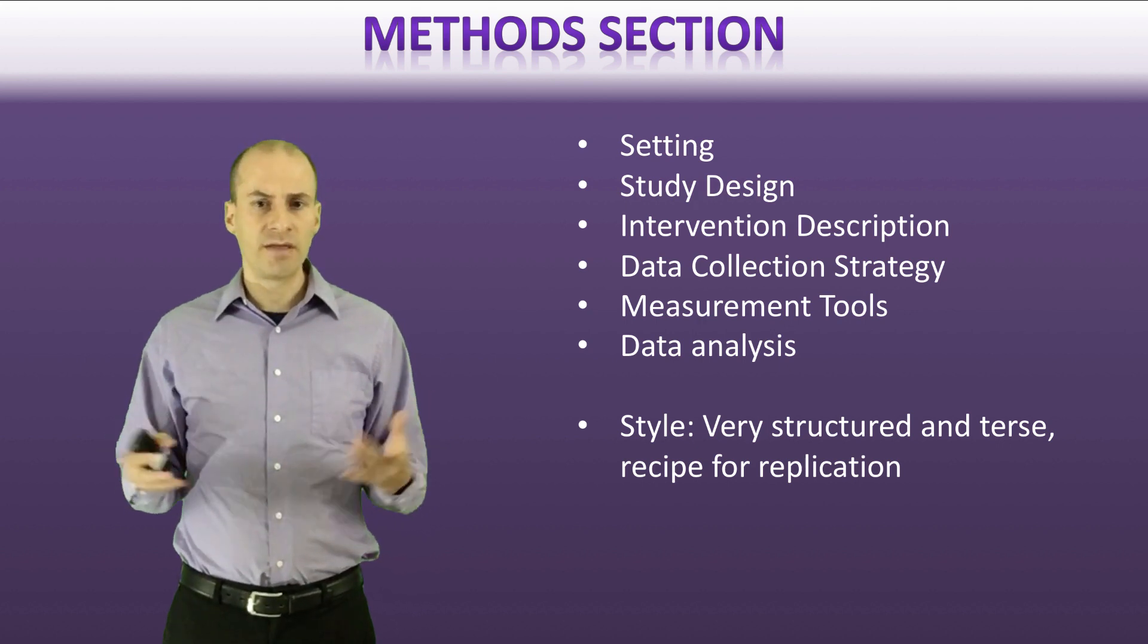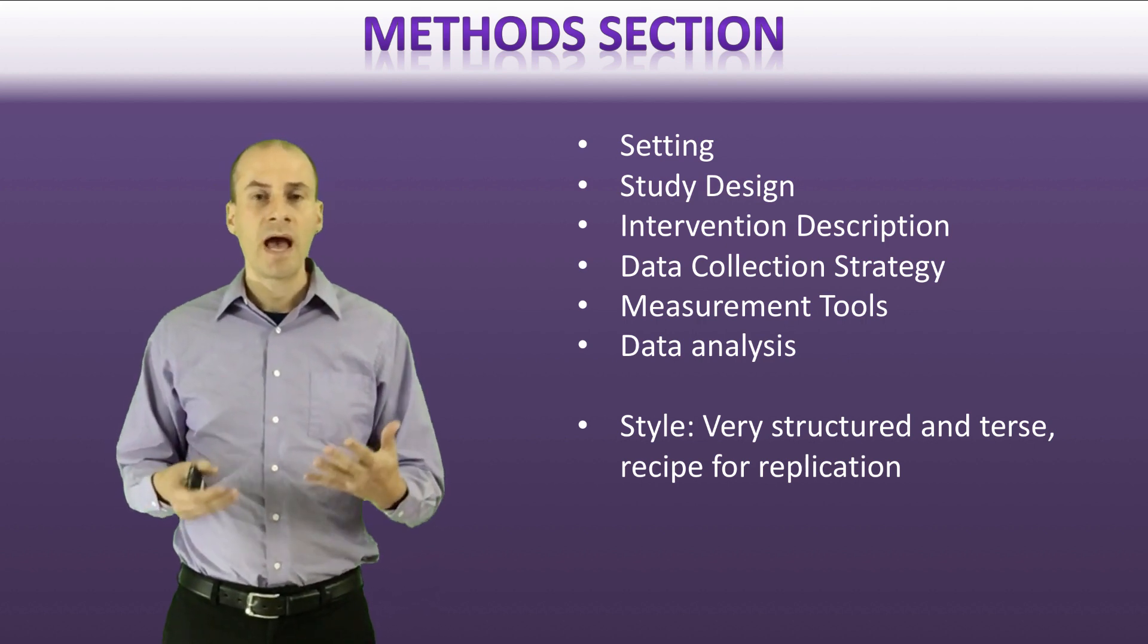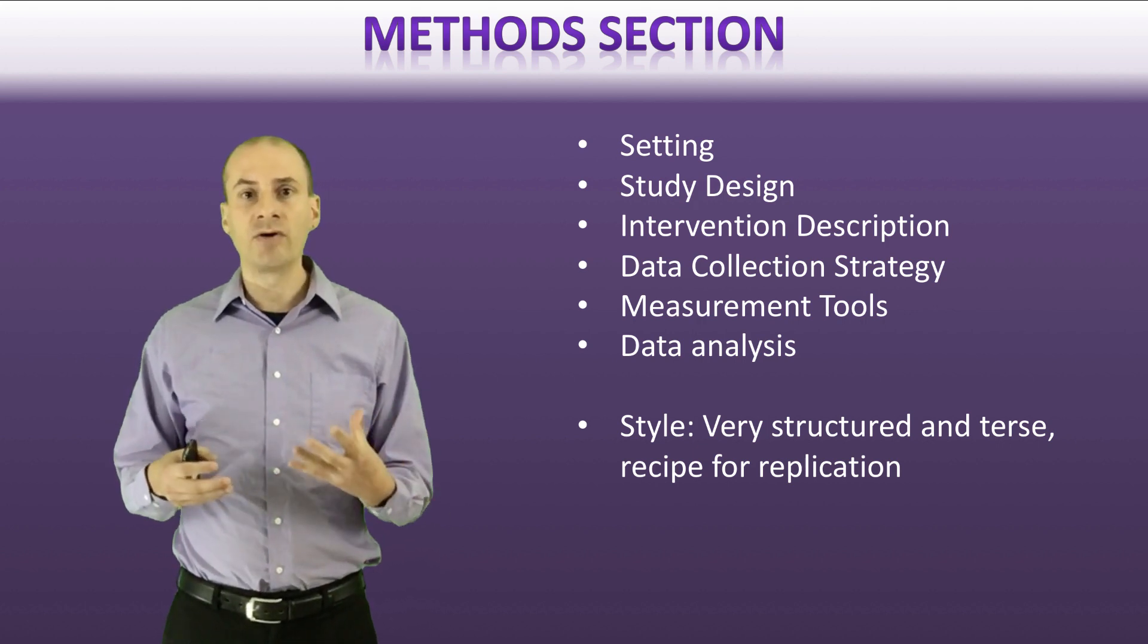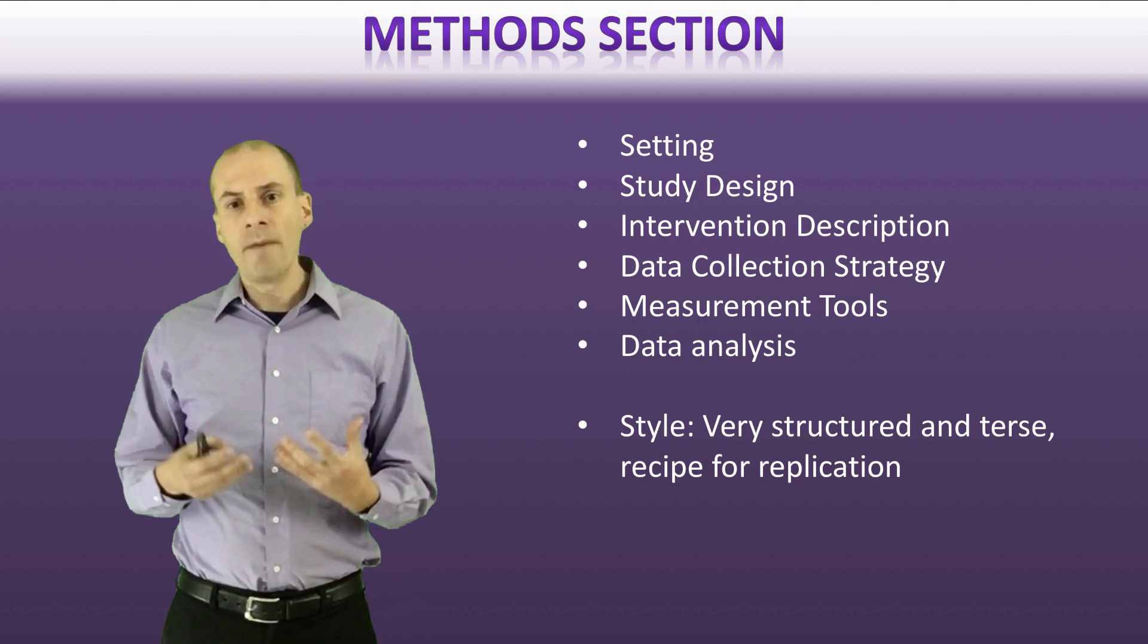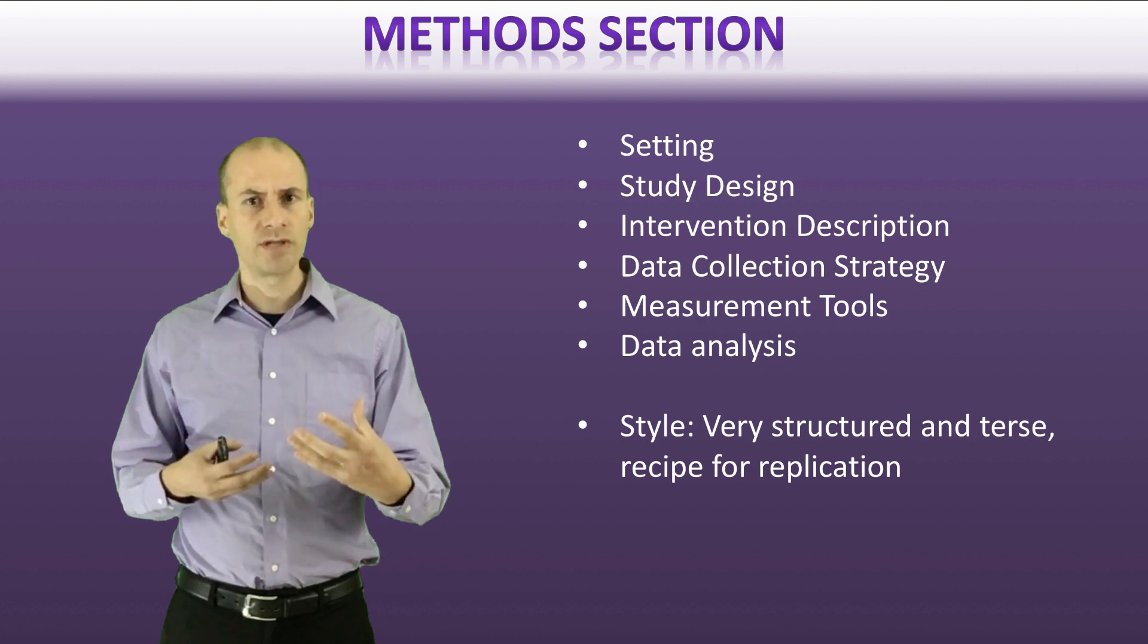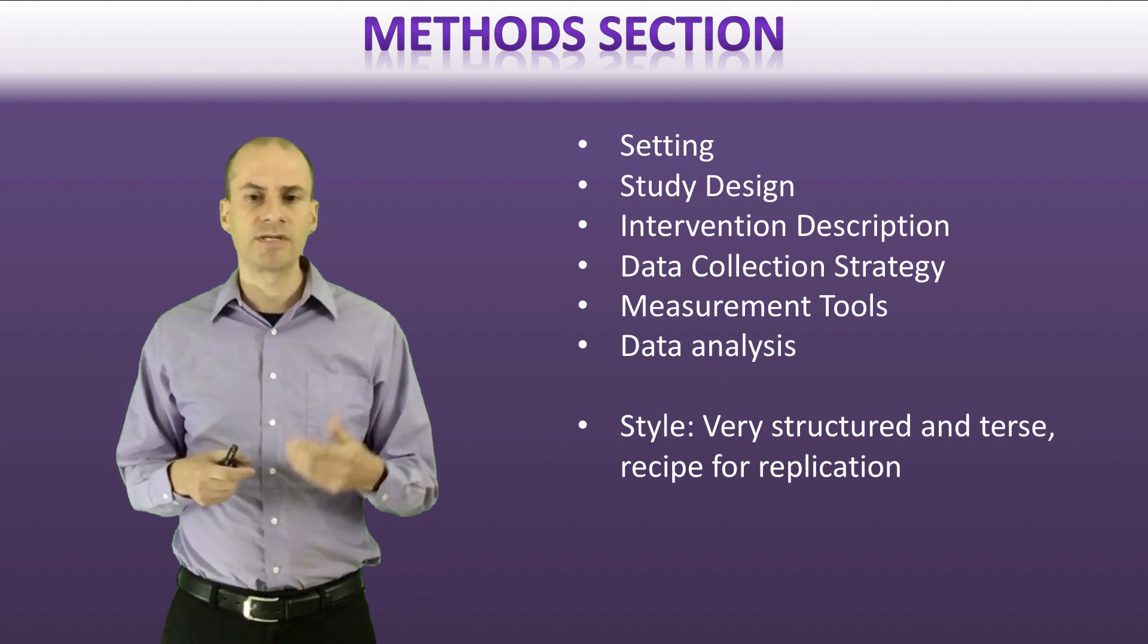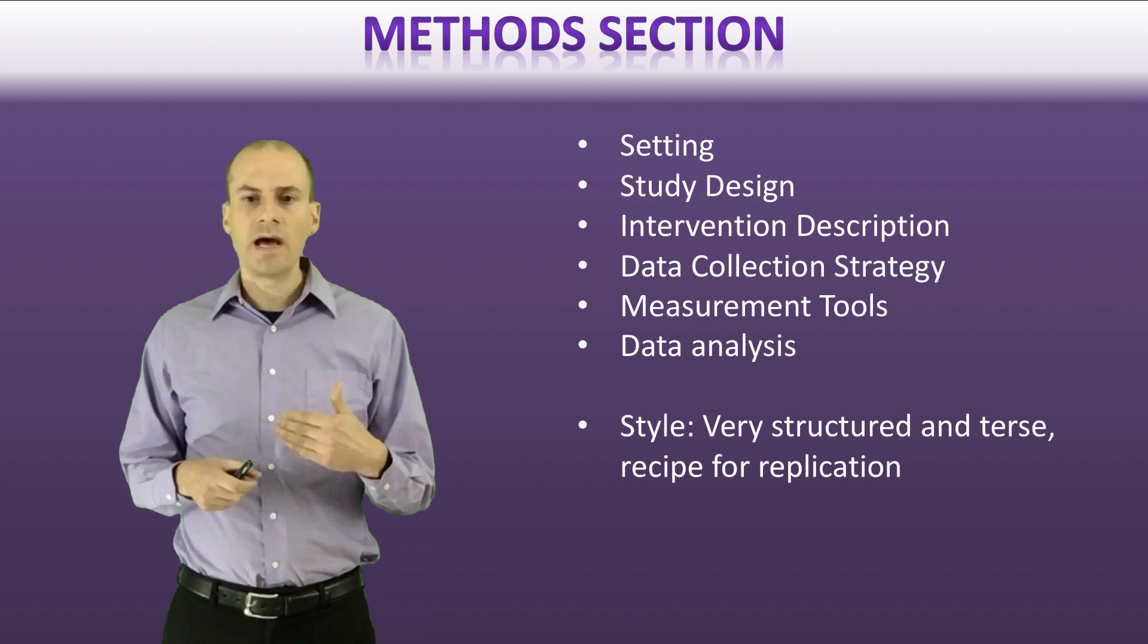The final section in the methods section will typically be the data analysis section. So they'll explain in that section how they put together, for example, their interviews to come up with conclusions, or how did they do statistical analyses of the information that they collected. Now a method section will typically have some reference to most of these components, but sometimes they'll be combined together in sections. Sometimes the order will be slightly different than I presented here, but that's generally what you'll typically see.